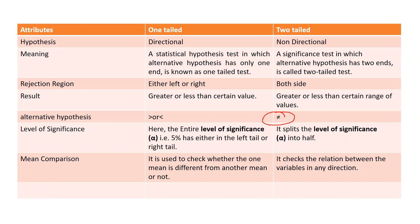In a one-tailed test, the alternate hypothesis uses either a greater-than sign or a lesser-than sign. For the level of significance: in a one-tailed test, the entire level of significance — for example, five percent — falls in either the left tail or right tail on one side. In a two-tailed test, it splits the level of significance in half, so 0.025 is on the left side and 0.025 is on the right side.